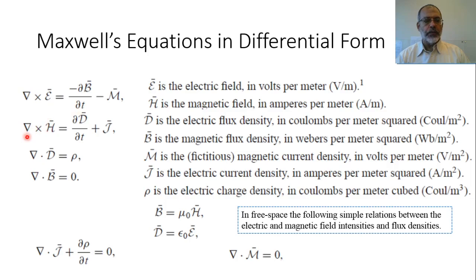The second equation is the rotation of the magnetic field, equals the derivative with respect to time of the electric flux density plus the electric current density J. The third equation is the divergence of the electric flux density equals the volume charge density. Finally, the divergence of the magnetic flux density equals zero, because there are no magnetic charges.